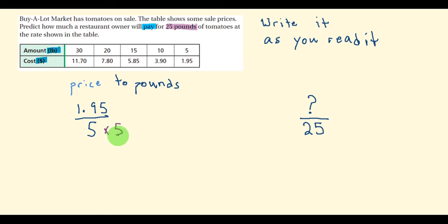Whatever you do to the bottom, you've got to do to the top. So let's multiply by 5 on top. And 1.95 times 5 will give you a value of 9.75, which will replace our unknown value. So you're paying $9.75 for 25 pounds.